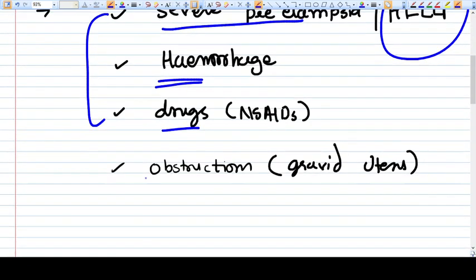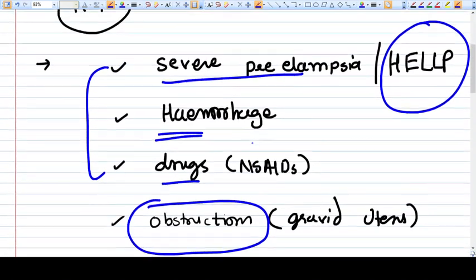Obstruction is also a common thing because of the gravid uterus. Very chronic obstruction of ureters is there, that's why it also aggravates the acute kidney injury. So you need to find out all these four causes.